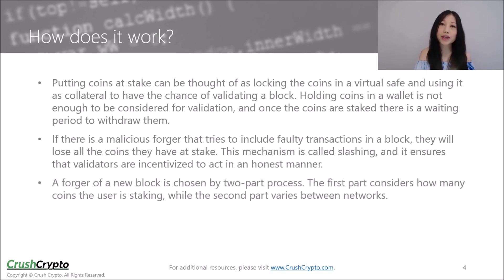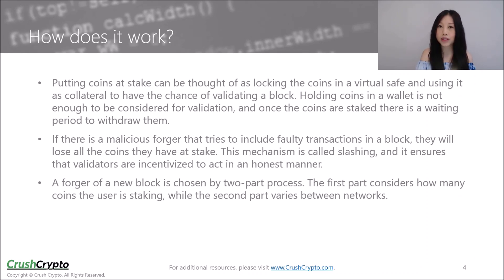A forger of a new block is chosen by a two-part process. The first part considers how many coins a user is staking, while the second part varies between networks. One commonly used method for the second part is randomized block selection, where forgers are selected by looking for users with a combination of the lowest hash value and highest stake. Another method is coin age selection, which chooses validators based on highest stake and how long the coins have been staked for.